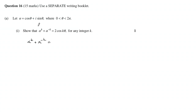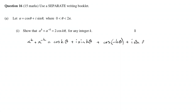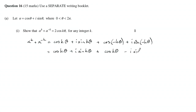By de Moivre's theorem, when you raise that to the power k, you get cos(kθ) plus i·sin(kθ), and then for the minus k it's just the same but with minus k. So you've got cos(−kθ) plus i·sin(−kθ). Now cos of minus k theta is just the same as cos(kθ), but for sine it's negative because sine of a negative angle is the same as negative sine of the angle.